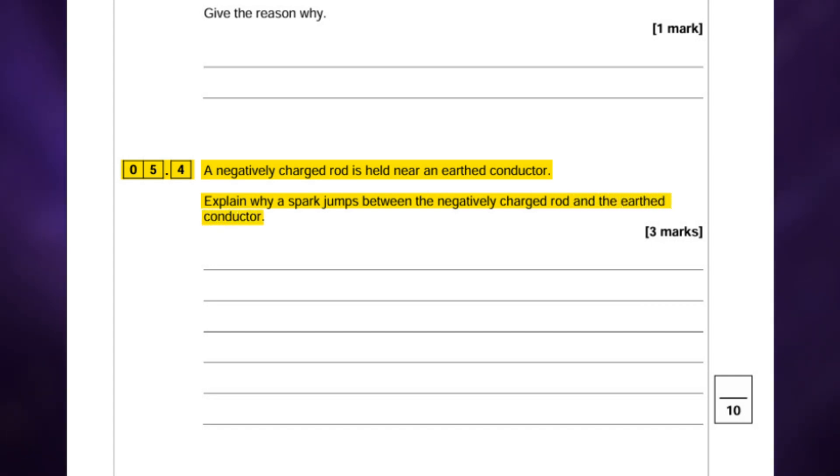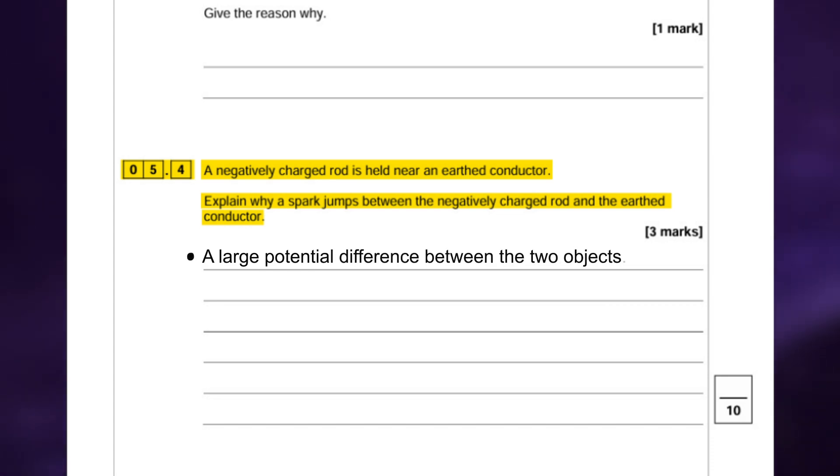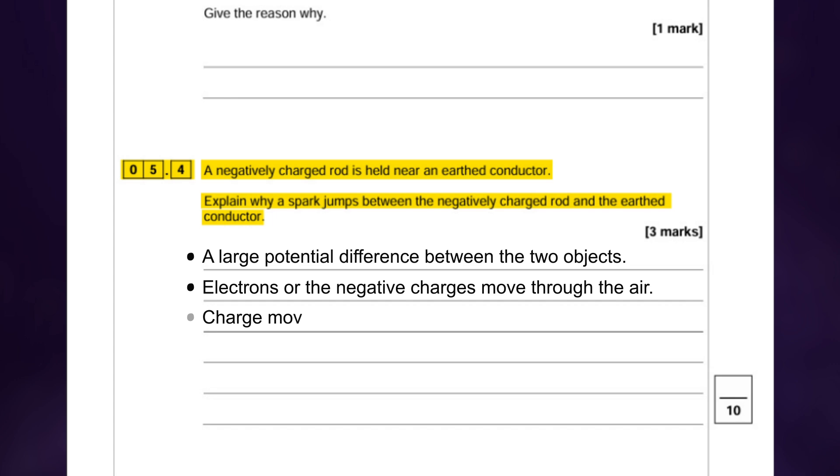Pause it here and try and have a go. The first mark was for saying that there was a large potential difference between the two objects. The second mark was for saying that electrons or the negative charges move through the air. And the third mark was for saying that this charge movement goes from the rod to the conductor.